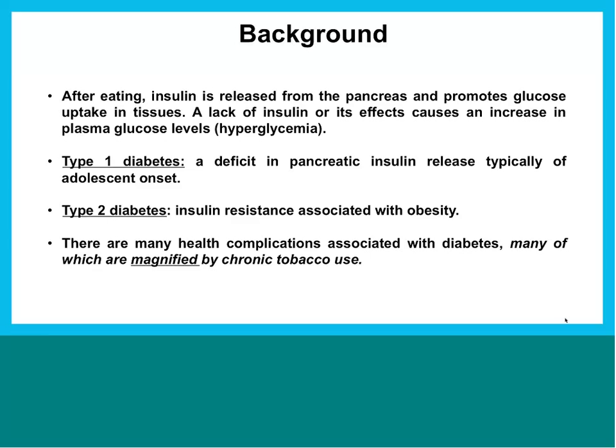In type 1 diabetes, you have patients who have deficits in producing, synthesizing, and releasing insulin from the pancreas. In type 2 diabetes, you are often seeing insulin resistance, which is associated with obesity — where insulin is present but the body does not respond to it very well. In both cases you end up with hyperglycemia, with many negative health consequences that are significantly magnified by chronic nicotine use.